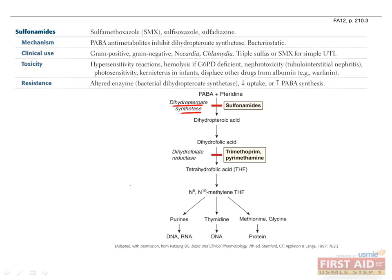The sulfonamides inhibit dihydropteroate synthetase by use of PABA anti-metabolites, and are bacteriostatic. They are clinically used for gram-positive and gram-negative organisms, as well as Nocardia and Chlamydia. SMX is used for simple UTI, and sulfadiazine is used in topical application against burns. They may induce hypersensitivity reactions, hemolysis in G6PD-deficient patients, nephrotoxicity, and kernicterus in infants. Bacterial resistance is a result of an altered enzyme, decreased uptake, or increased PABA synthesis.